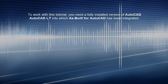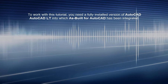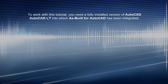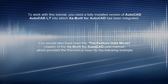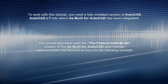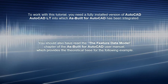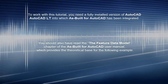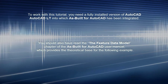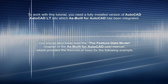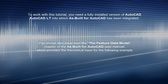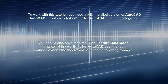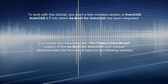To work with this tutorial, you need a fully installed version of AutoCAD or AutoCAD LT, into which As Built for AutoCAD has been integrated. You should also have read the Feature Data Model chapter of the As Built for AutoCAD User Manual, which provides the theoretical base for the following example.